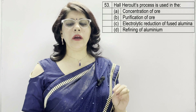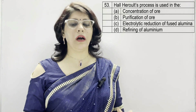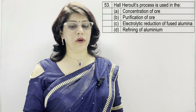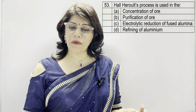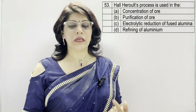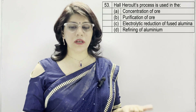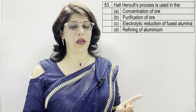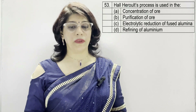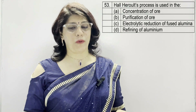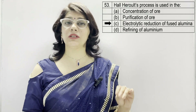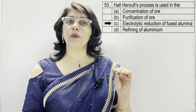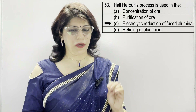In question number 53: Hall-Heroult's process is used in — A: concentration of ore, B: purification of ore, C: electrolytic reduction of fused alumina, D: refining of aluminium. The correct option is C — electrolytic reduction of fused alumina.